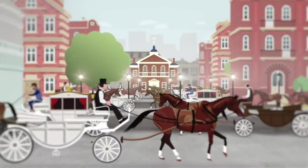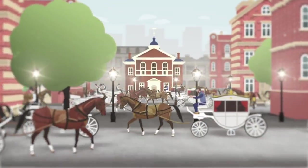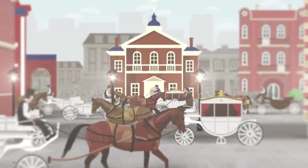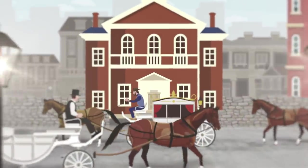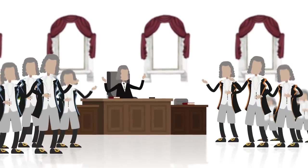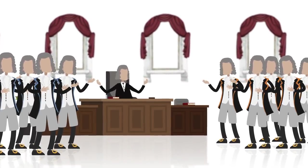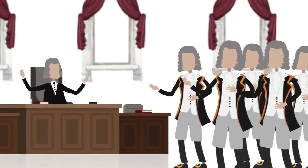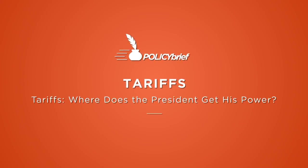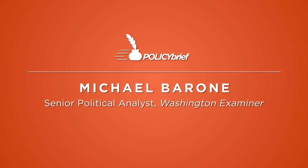Tariffs for the first 140 years after the ratification of the Constitution were passed by Congress, and they became one of the centerpieces of political rivalries and partisan differences. The first Congresses passed tariff laws at a time when tariff revenues were the main source of money. For more than 100 years, it was the Republicans who were the high-tariff party and the Democrats were the low-tariff party.